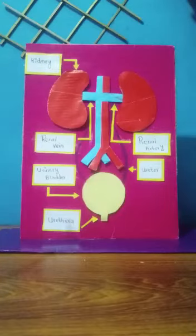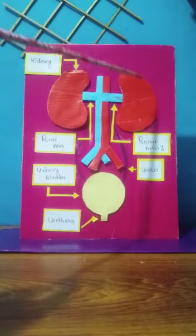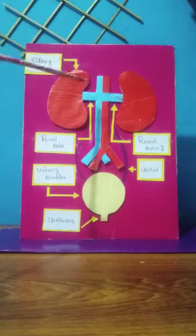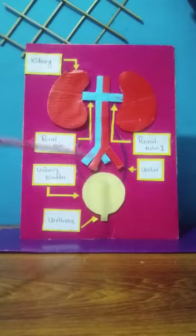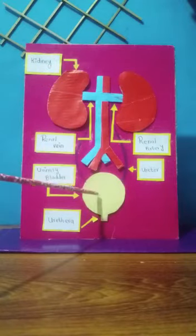Good morning and Assalamualaikum. I am Tanzila Hakeel and I am here to tell you about the human excretory system. The human excretory system consists of one pair of kidneys and associated structures, two ureters, a urinary bladder and urethra.